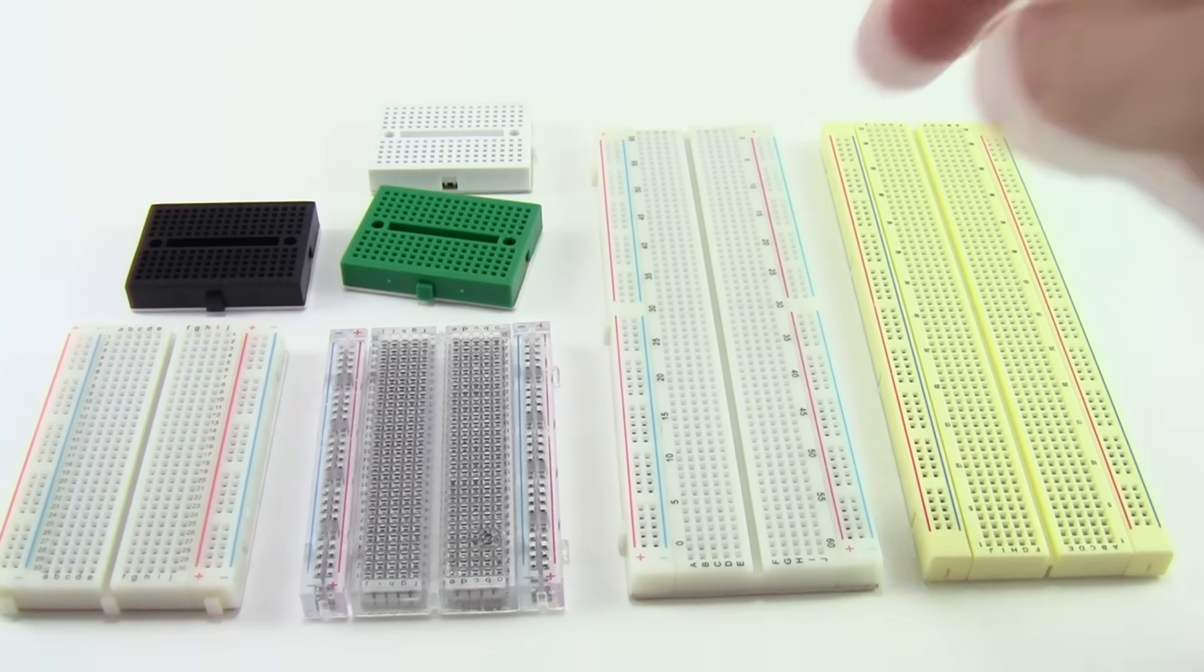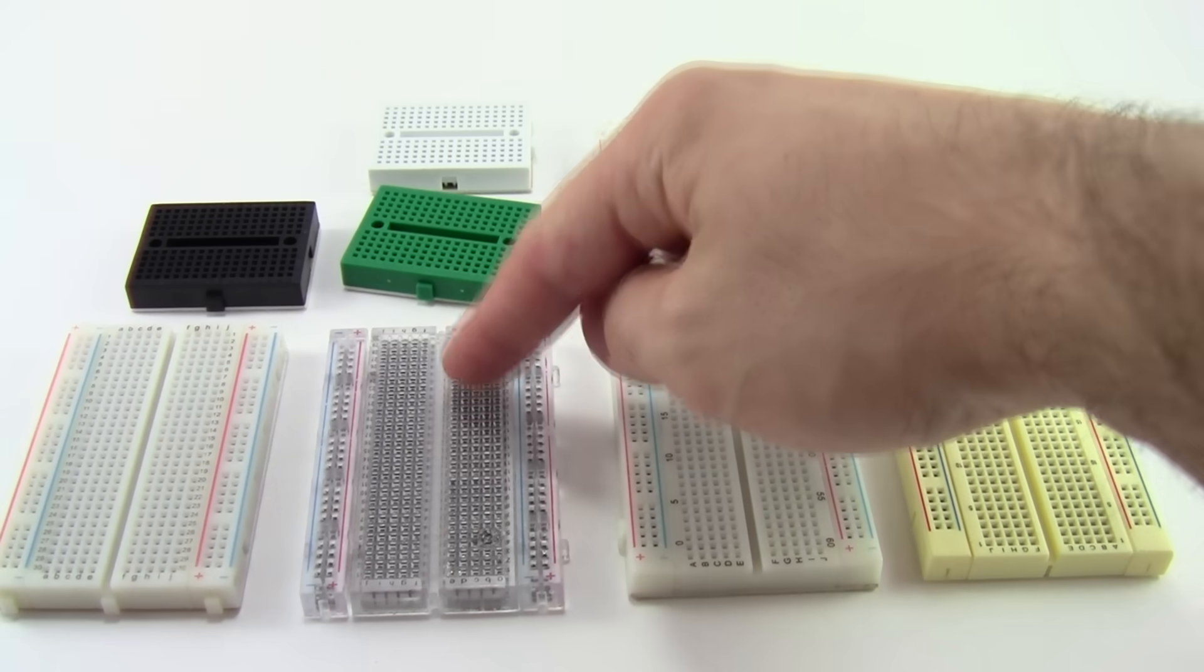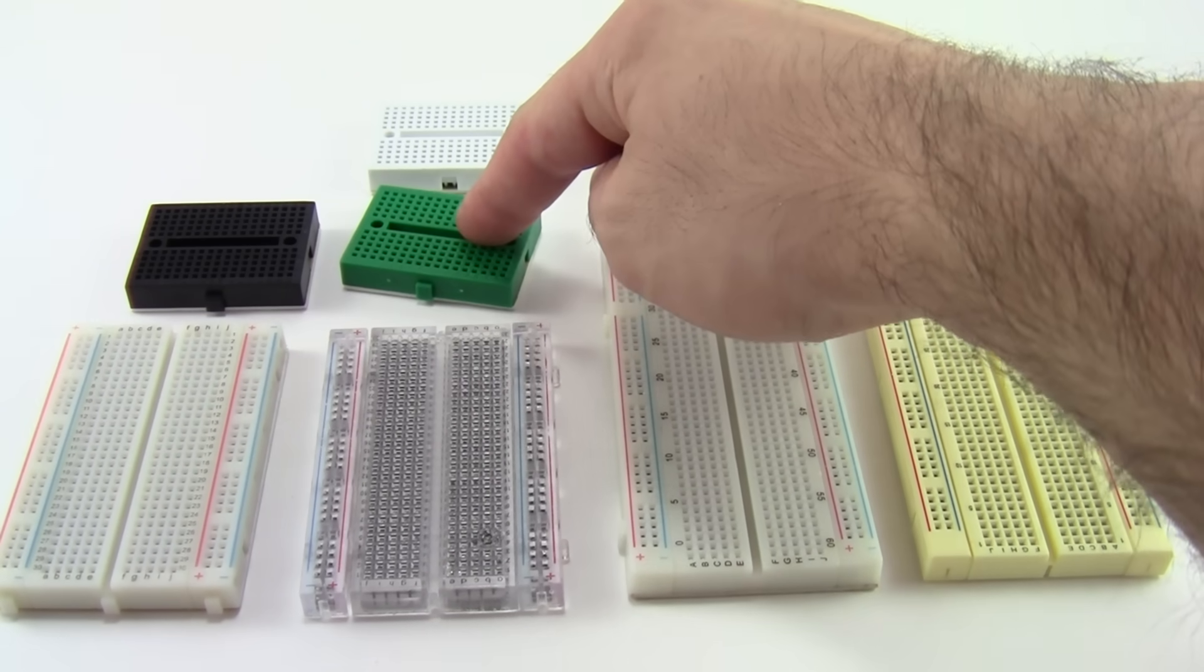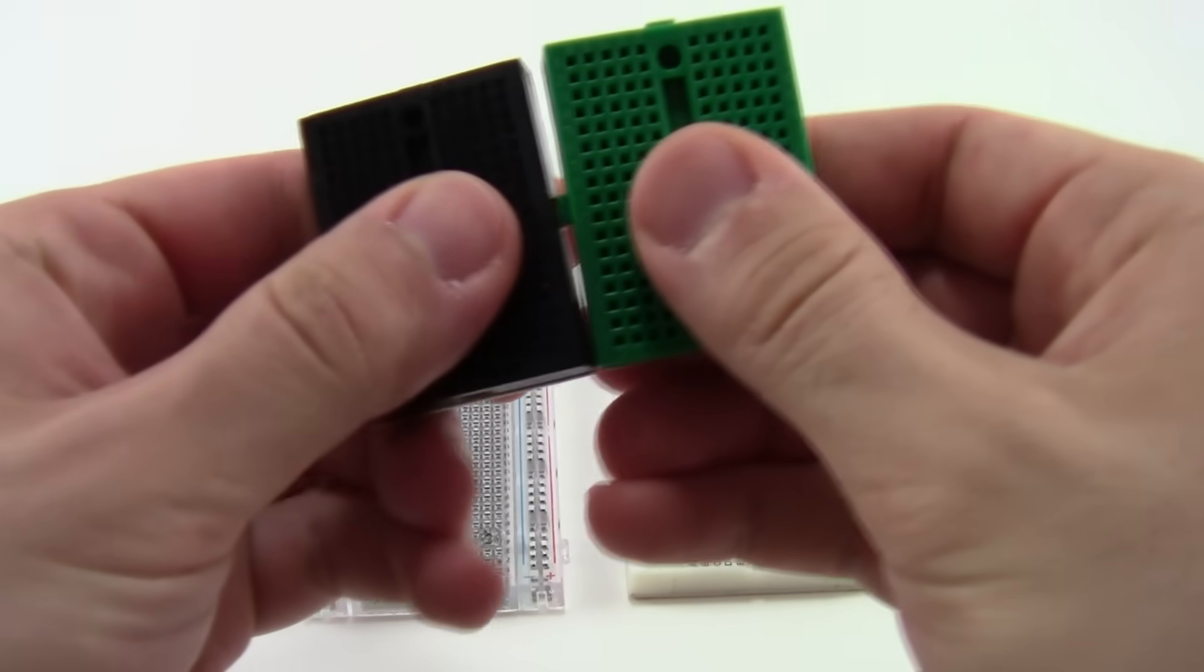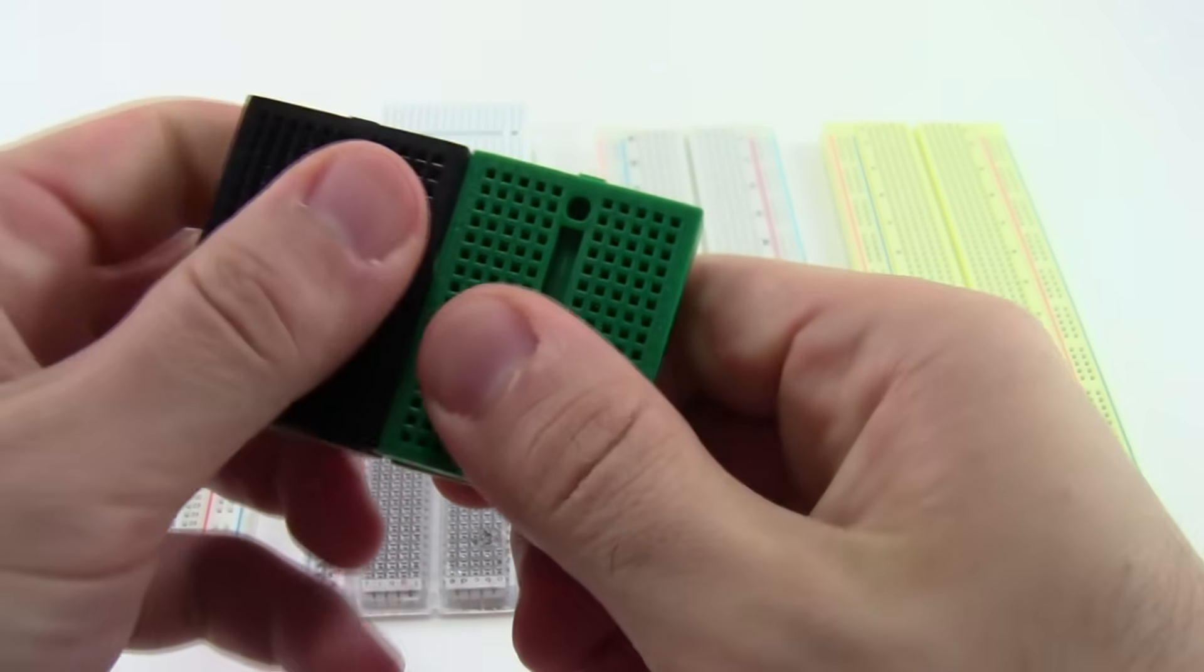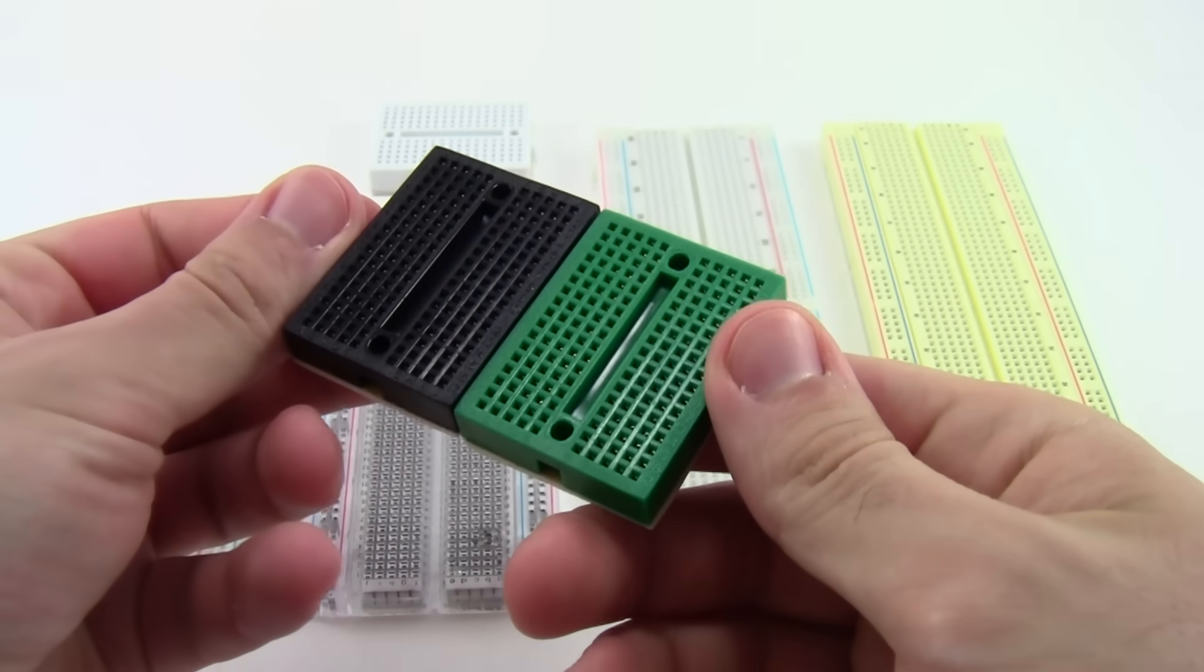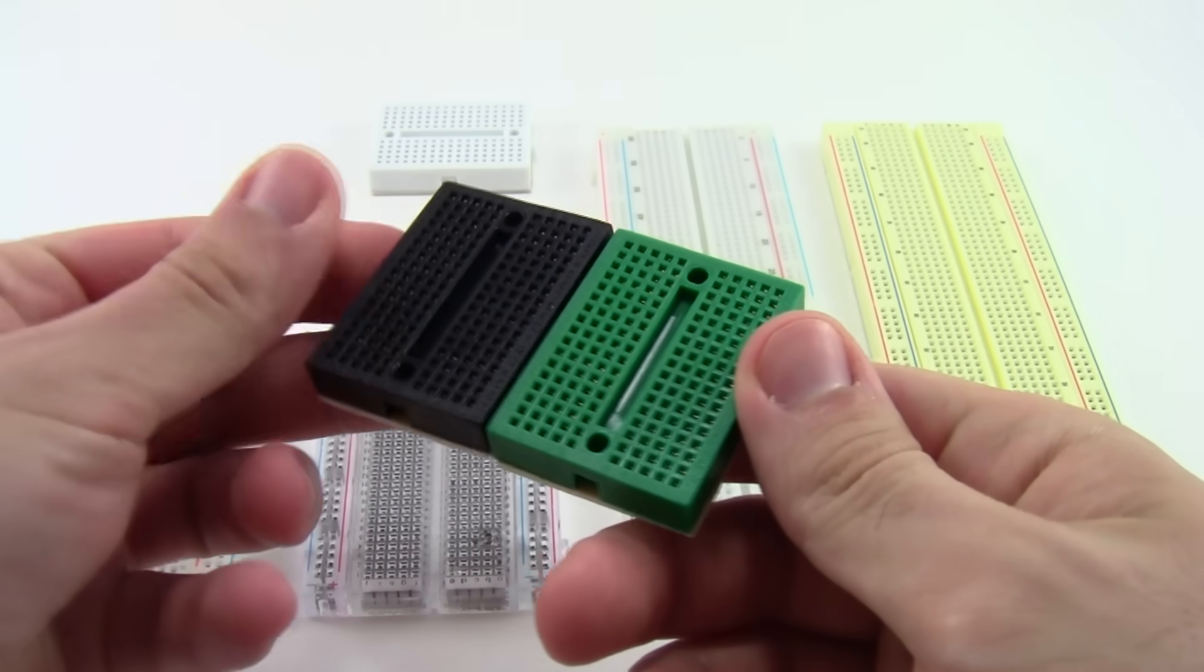The most common sizes you'll probably see are full-size breadboards, half-size breadboards, and mini breadboards. Larger and smaller sizes are available, and many breadboards come with tabs and notches on the side that allow you to snap two or more of them together, but a single breadboard will be more than sufficient for most beginner projects.